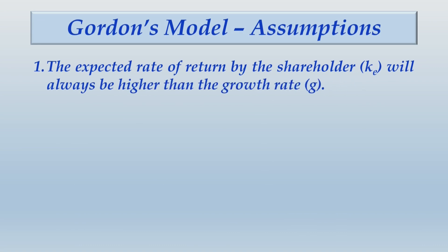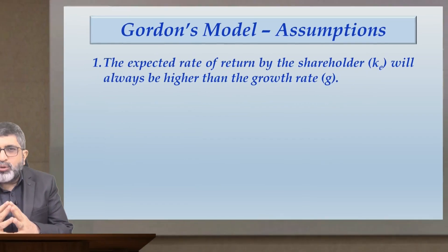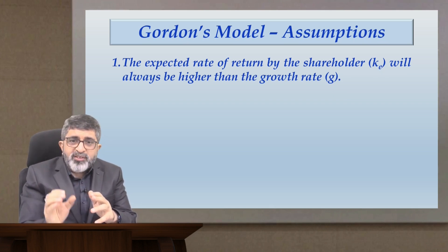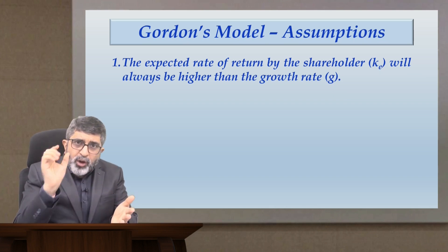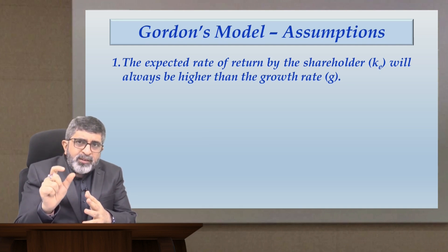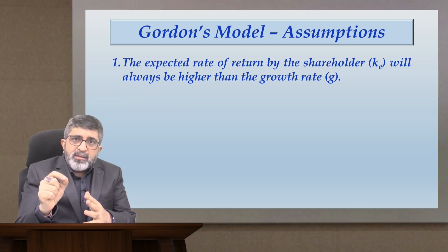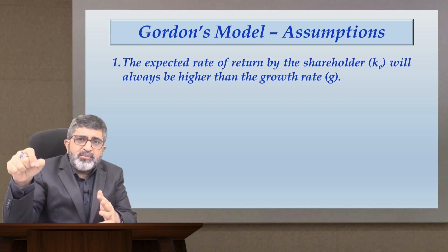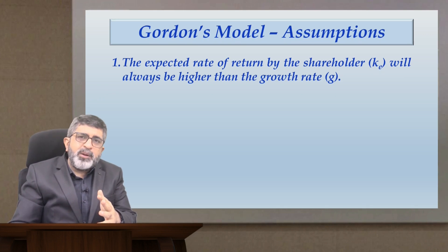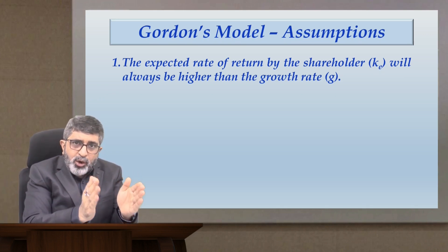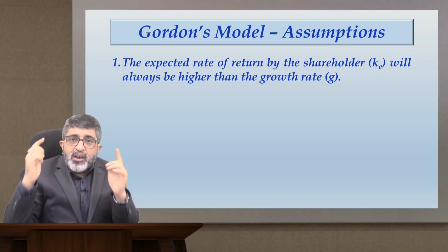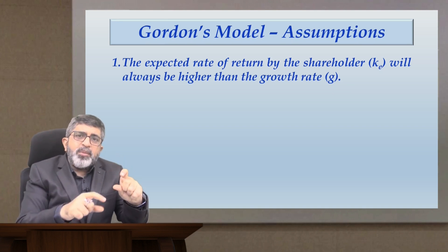I have not yet given you the formula notation by Gordon. Gradually in this class I am going to bring you to the constant growth formula by Gordon. In that model, you determine the P0 value by taking only the upcoming dividend in the first year, that is D1. D1 is divided by the difference between ke minus g — so cost of equity minus growth rate becomes the denominator. D1 divided by ke minus g.